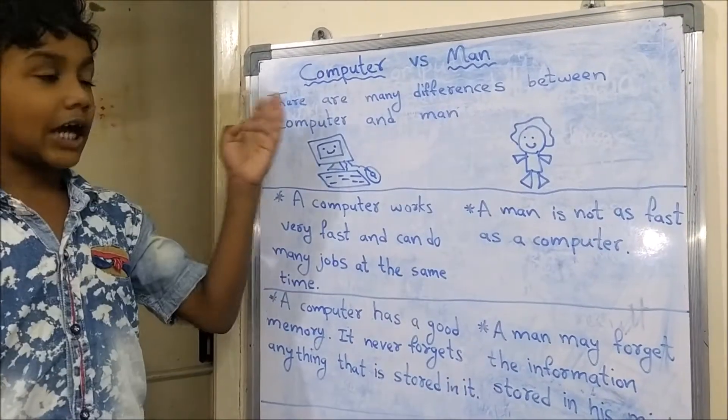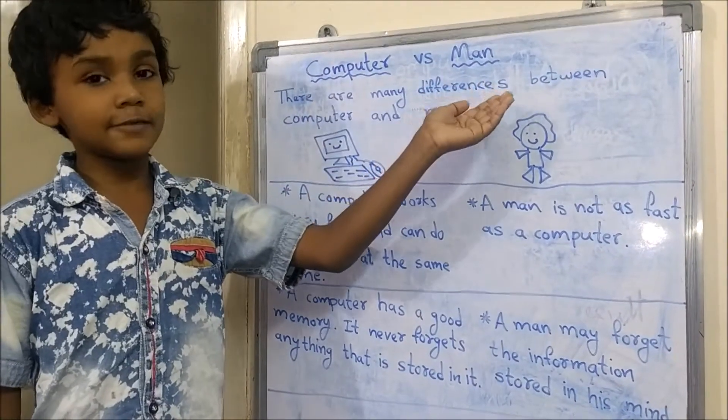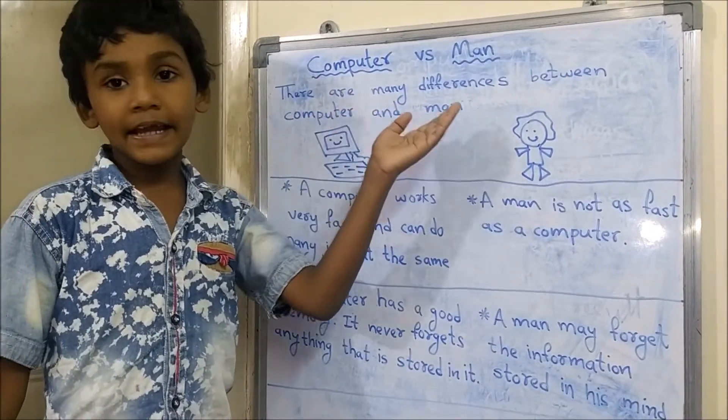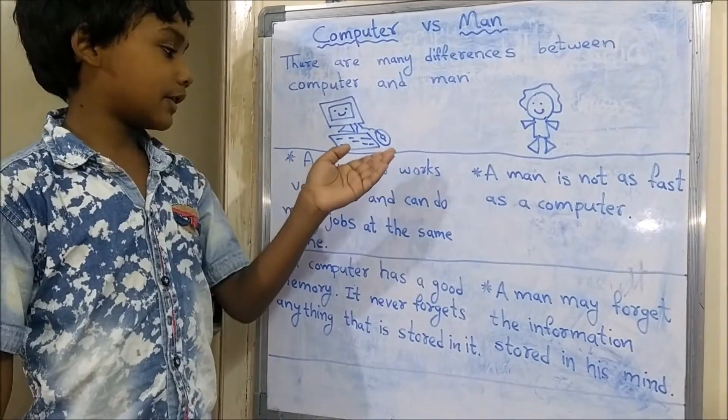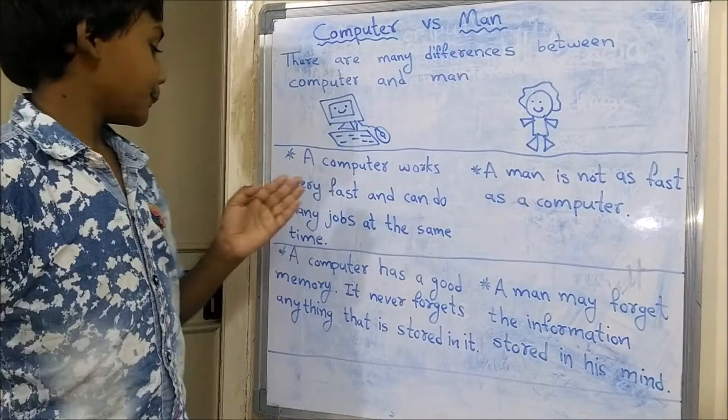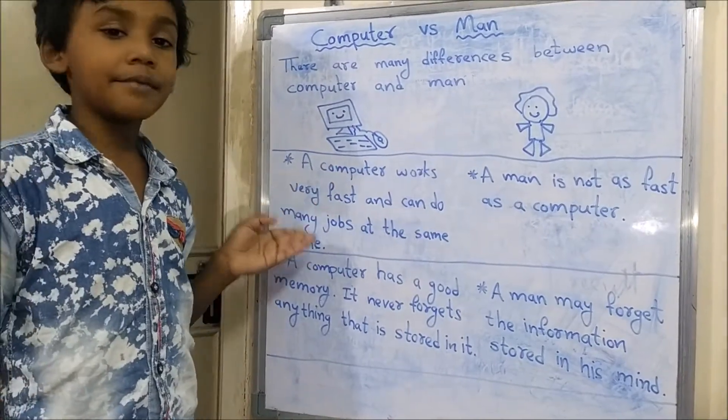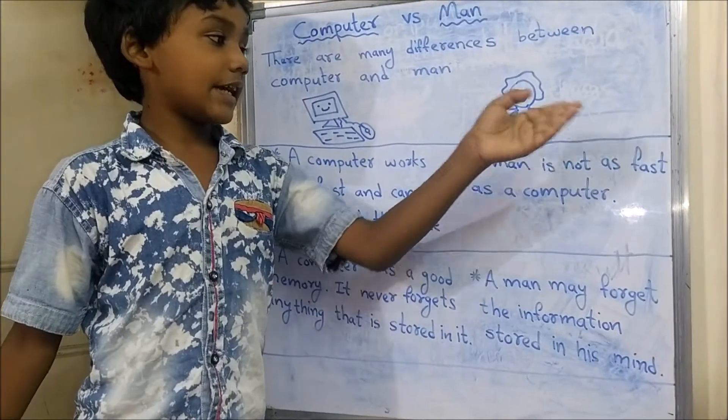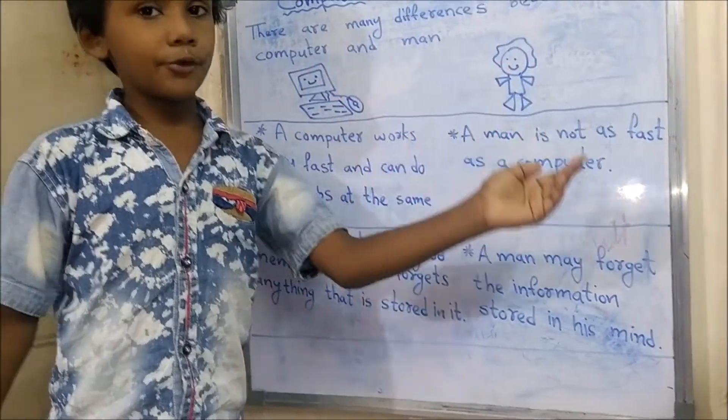There are many differences between the computer and man. A computer works very fast and can do many jobs at the same time. A man is not as fast as a computer.